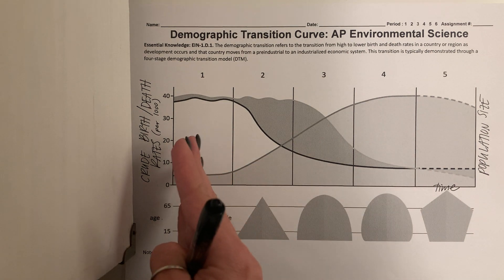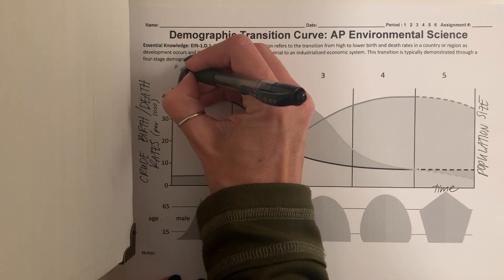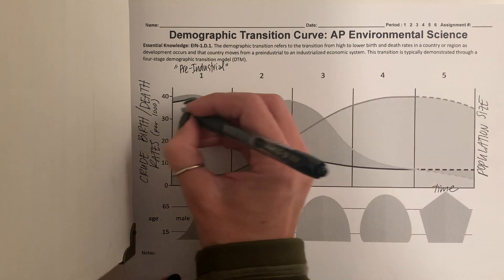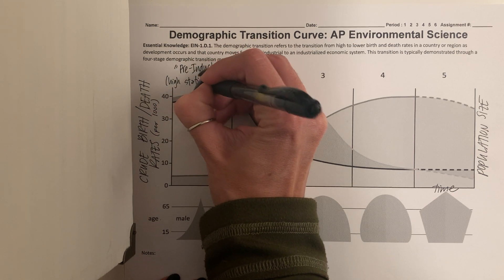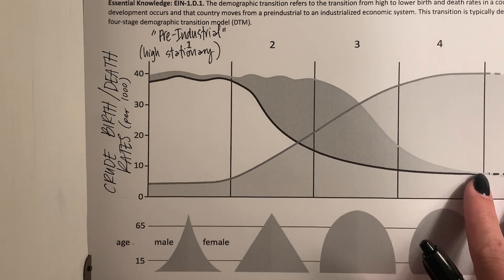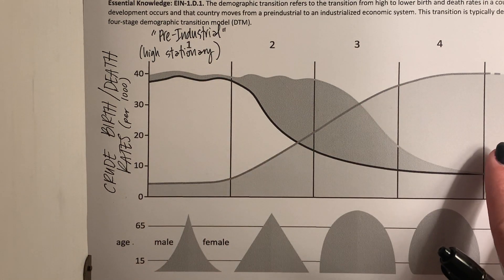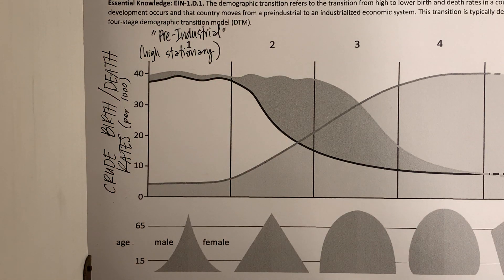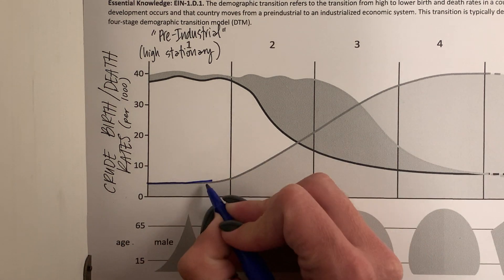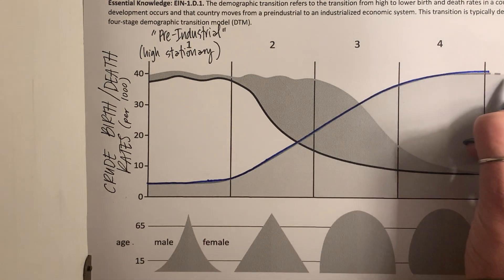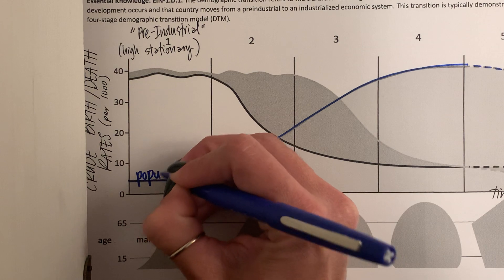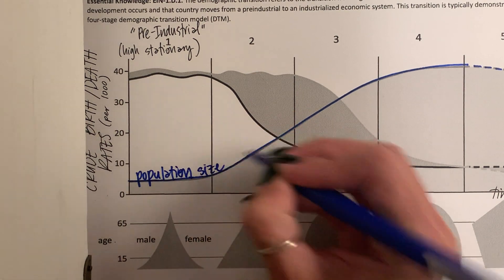Stage 1 is known as the pre-industrial stage, also referred to as high-stationary. On our graph, the blue line that starts low and increases then levels out depicts our population size changing over time. The green line depicts our crude birth rate, and the red line just below it depicts our crude death rate.